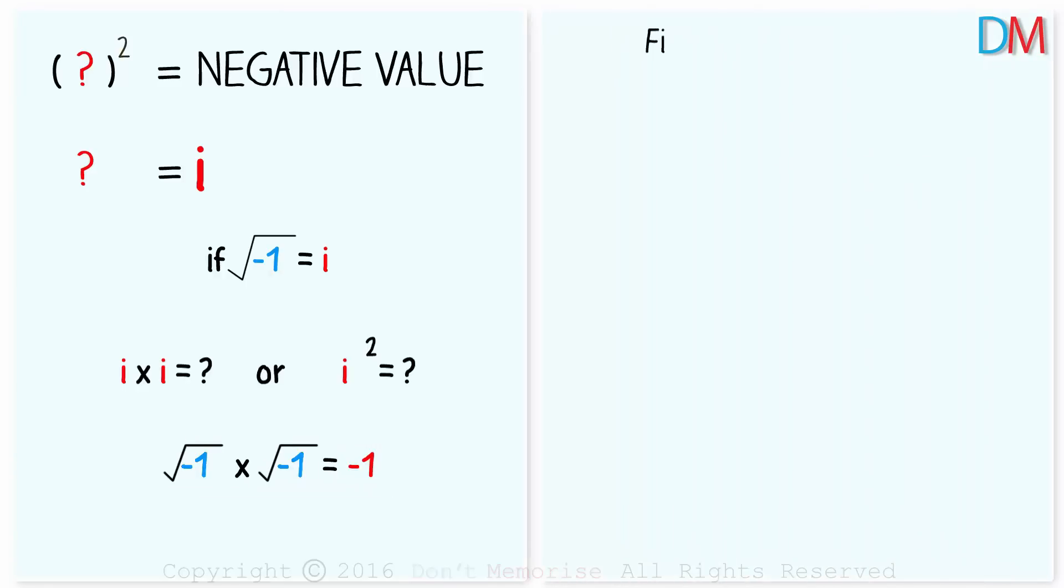And the next question was, can you find a solution to x squared plus 1 equal to 0? The answer is yes. Transposing 1 to the right hand side, we get x squared as negative 1. Taking the square root on both sides, we get the value of x as root of negative 1 or minus root of negative 1. That is plus minus i.